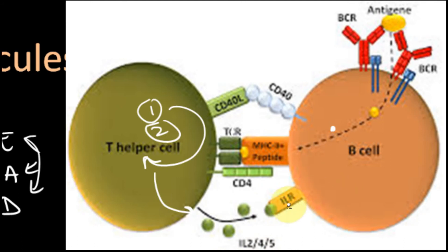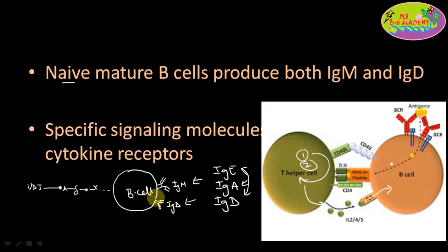On activation, T helper cells release cytokines like interleukins 2, 4, and 5. These interleukins bind with interleukin receptors on the B cell, initiating a signaling pathway inside. This signaling will alter the constant region gene segments — determining which class needs to be switched. The whole process of class switching then starts, and when the B cell differentiates into plasma cells and memory cells, the plasma cell produces that particular class of antibody activated by this signal.